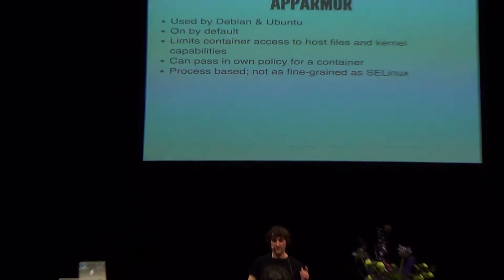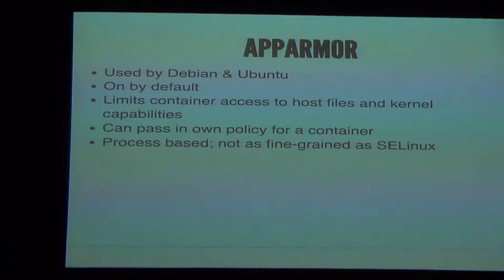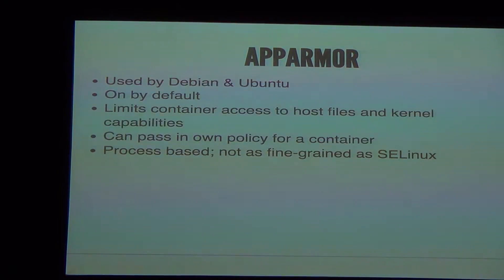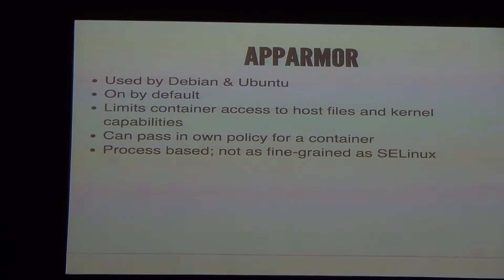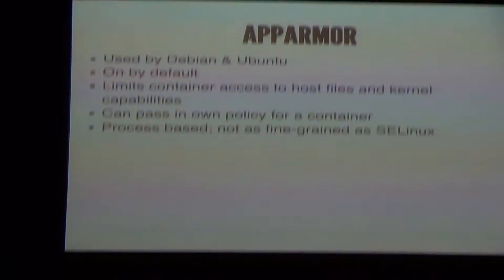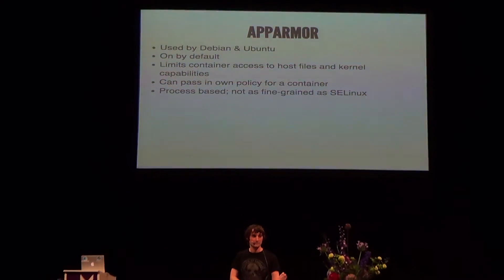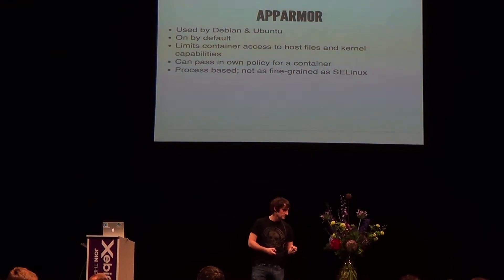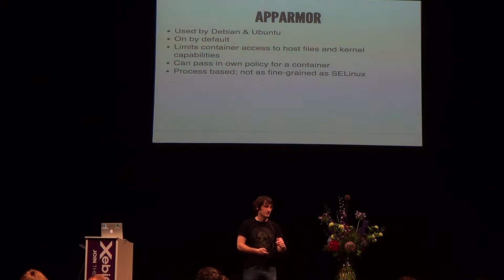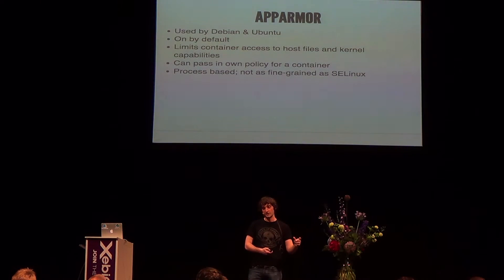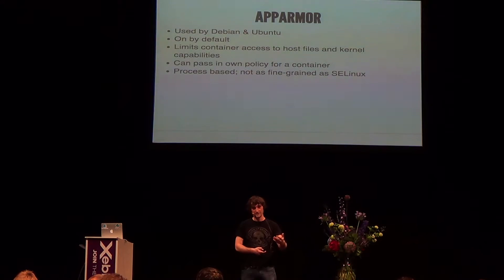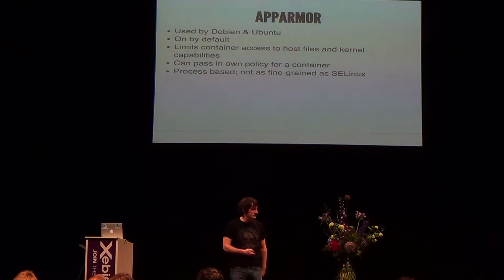AppArmor — if you're on Debian or Ubuntu you're actually probably already using it. It's on by default and does something similar to SELinux, but it's not as fine-grained or powerful. Docker applies an AppArmor profile to every container, limiting what it can do. You can pass in your own policy for a container or turn off the AppArmor policy if you have a problem with it, but you can't currently change the default policy — if you modify it in the file, Docker will overwrite it on restart. AppArmor is useful, but it's not as strong as SELinux.